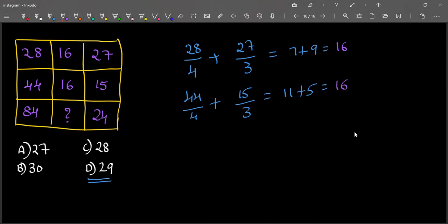So what is the logic here? The first number is to be divided by 4 and the last number is to be divided by 3, and we need to add those quotients in order to get this middle number.